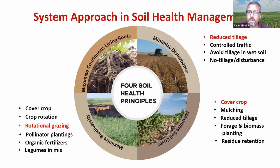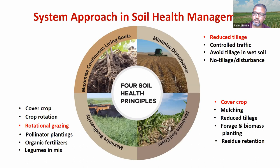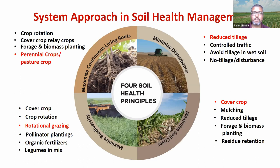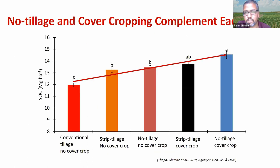Then there is increasing diversity — one is plant diversity through planting a variety of cover crops, and another is integrating animals into the system. We are also looking at maximizing continuous living root. We started some projects on pasture cropping and perennial cropping.